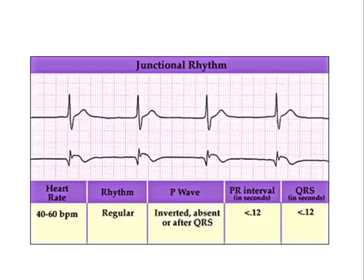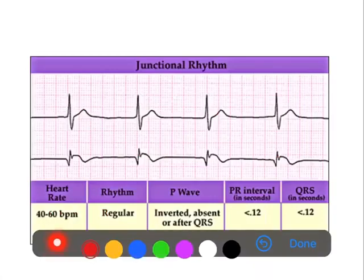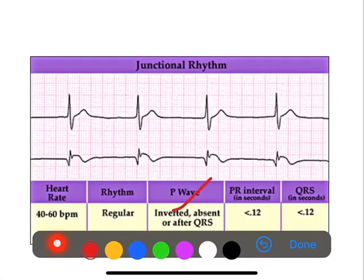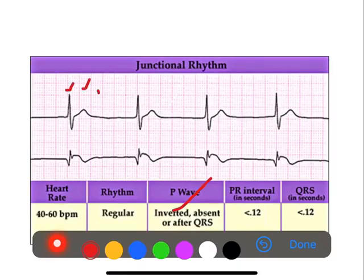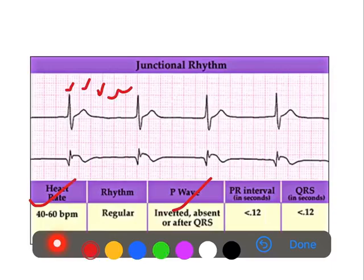This is an example ECG. You can see that there is no P wave, which meets the first criteria of absent P wave. Calculating the heart rate by counting large boxes — 1, 2, 3, 4, 5, 6 — the heart rate lies between 40 to 60 per minute. Regarding the PR interval, since there is no P wave, we cannot calculate it directly, but we consider a PR interval of less than 120 milliseconds. The QRS is also less than 120 milliseconds. These criteria confirm that this ECG represents a junctional escape rhythm.